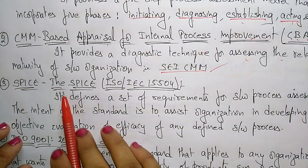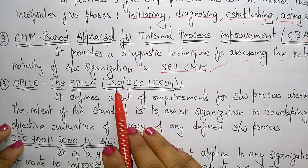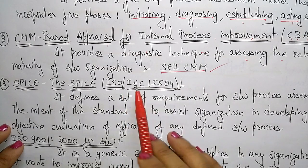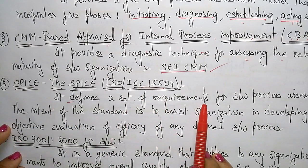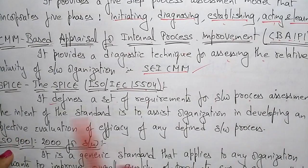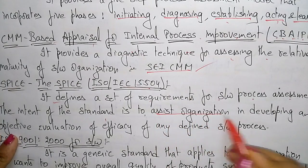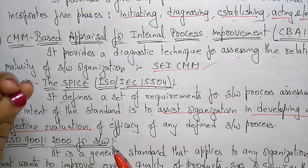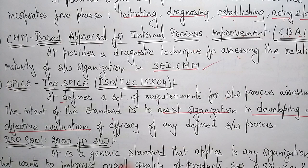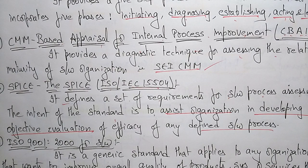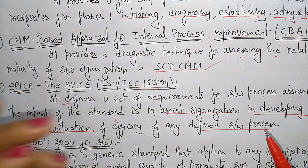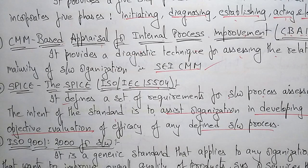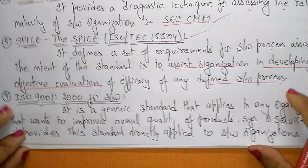The next process assessment standard is SPICE. SPICE is an International Organization for Standardization (ISO) standard. It defines a set of requirements for software process assessment. The intent of the standard is to assist organizations in developing an objective evaluation of the efficacy of any defined software process. If a process has this type of evaluation, it will be given the SPICE standard.